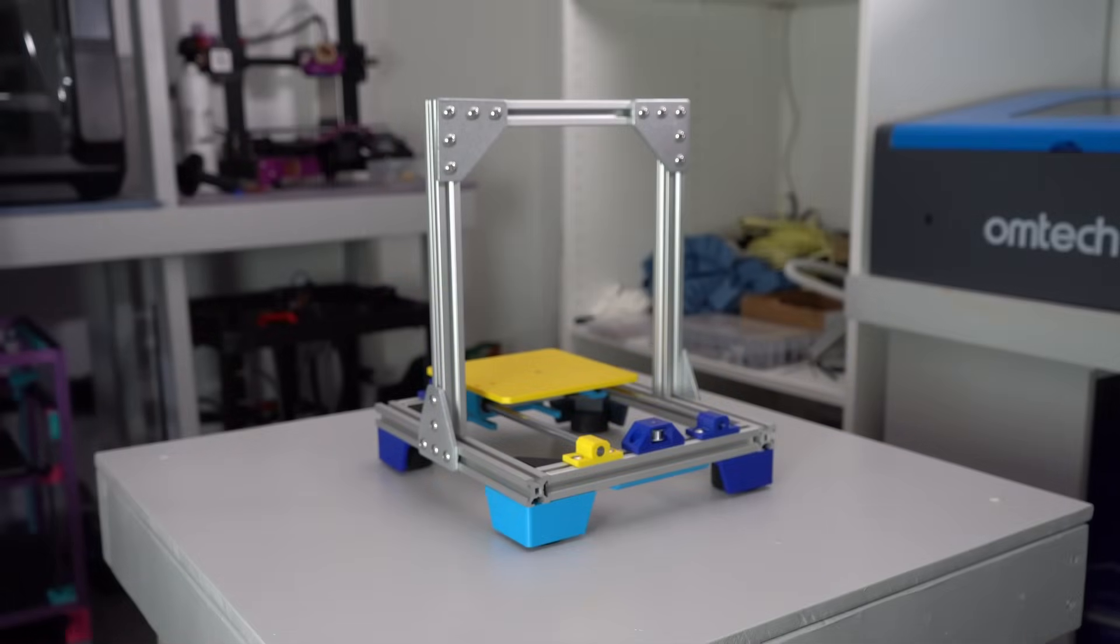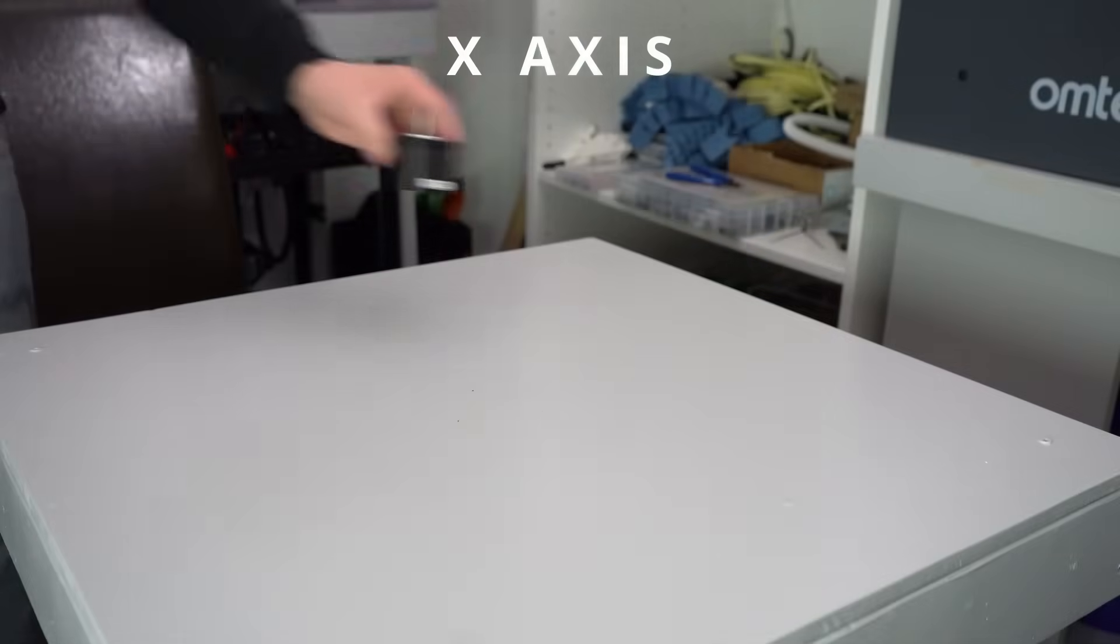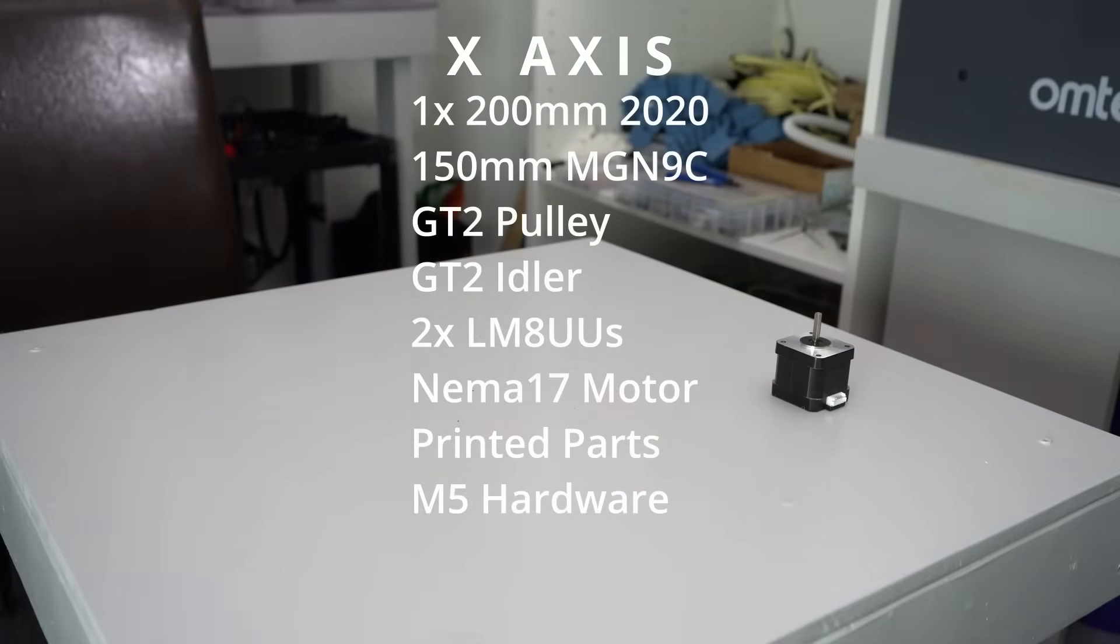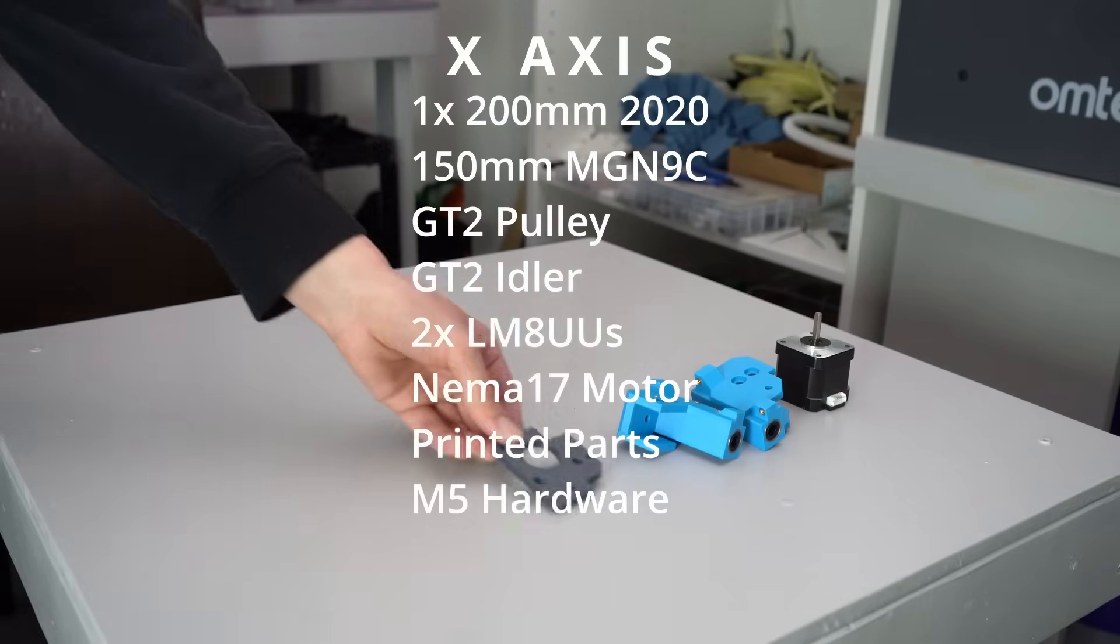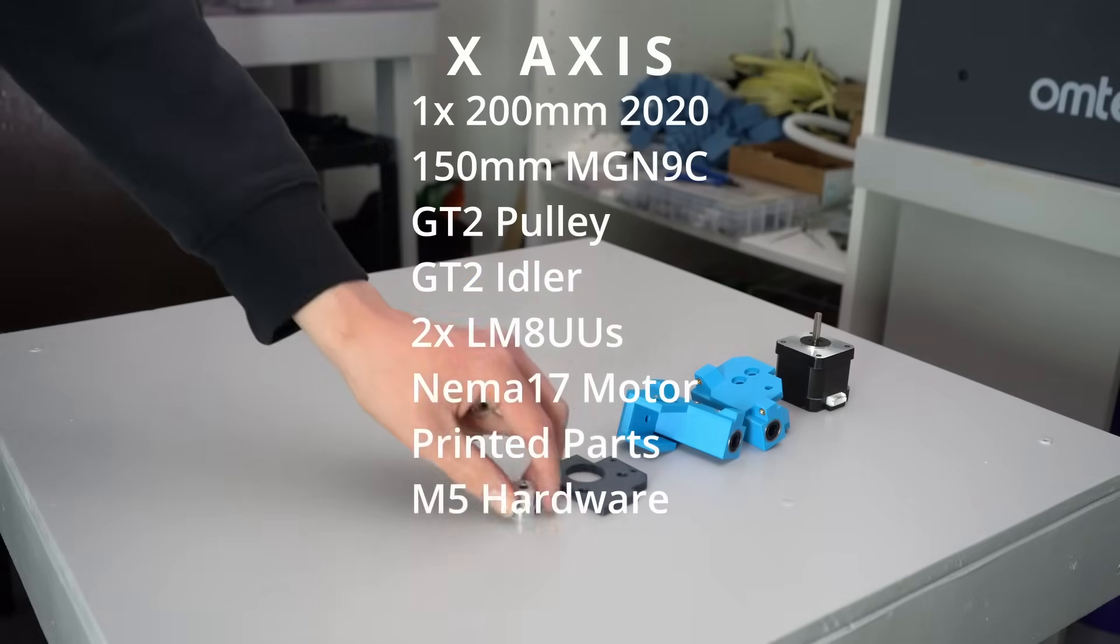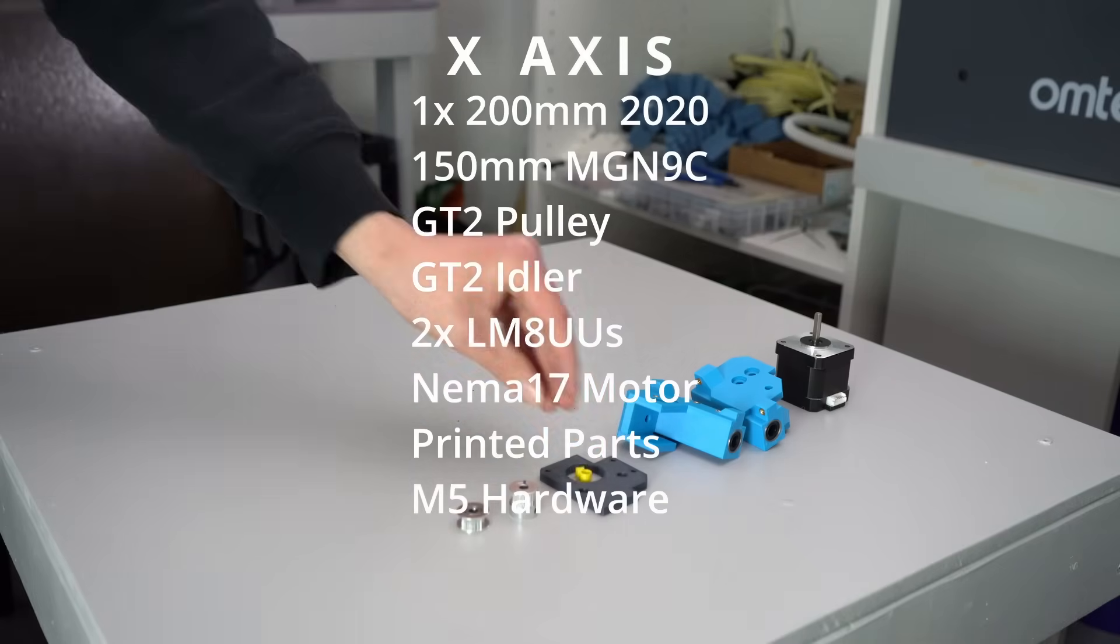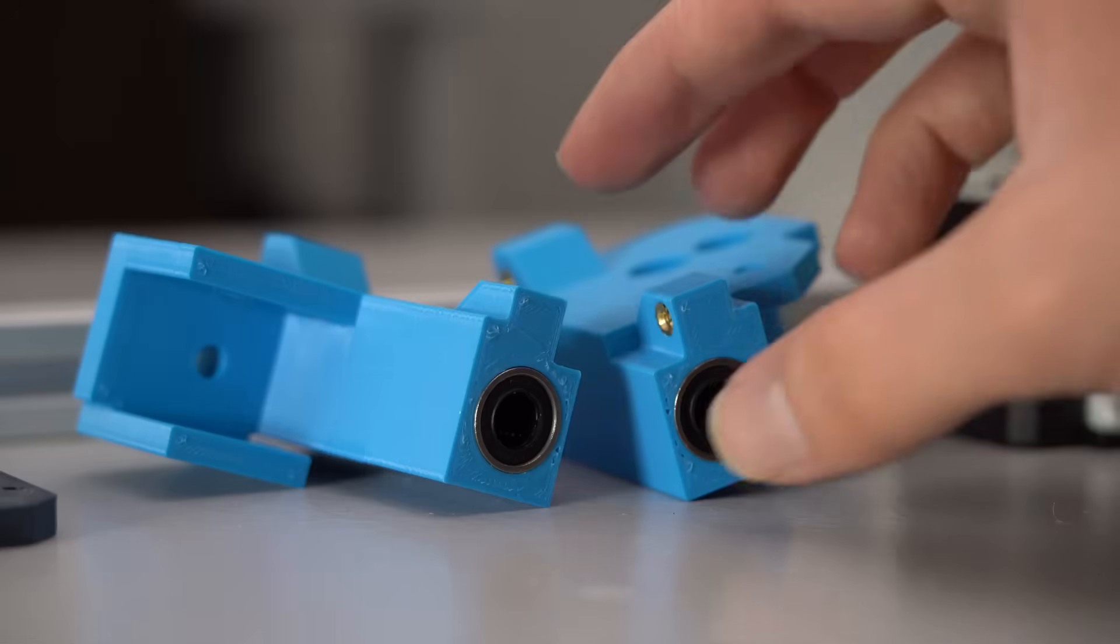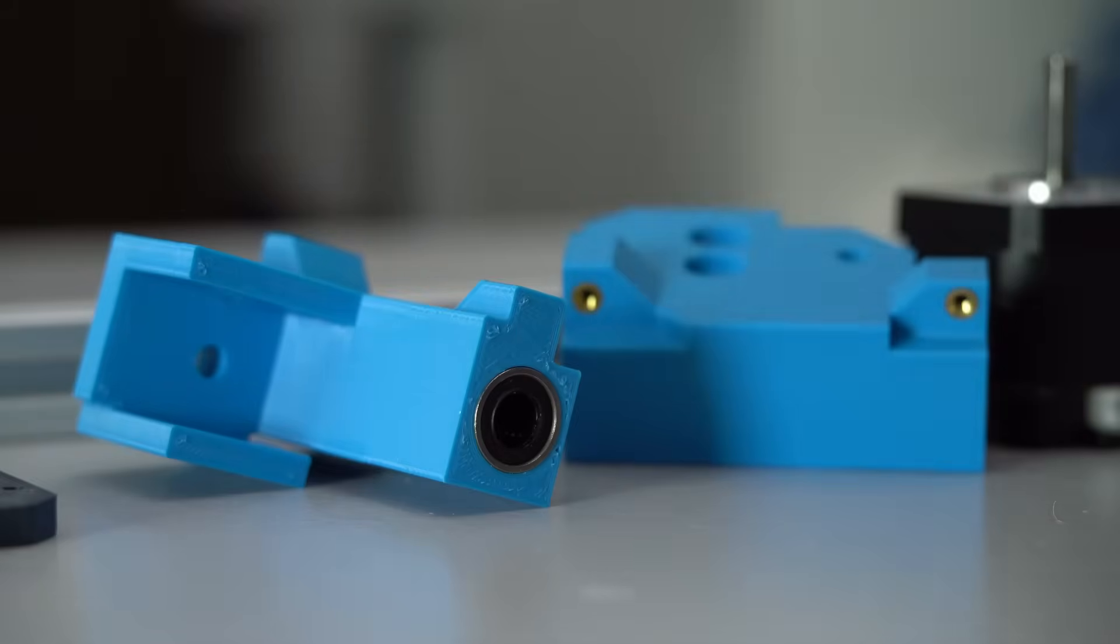Okay, that's the frame complete, and we can move on to the X-axis now. For the X-axis, you will need the final 200mm extrusion, a 150mm MGN9C linear rail, a pulley, an idler, two linear bearings, another NEMA 17, and all of the required printed parts and hardware. These parts also require several heat set inserts, as well as the linear bearings which need to be pressed in.